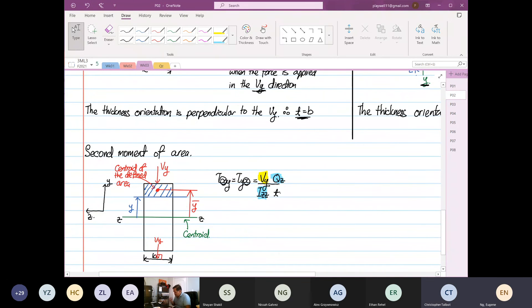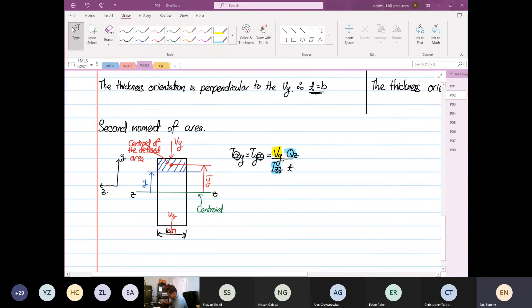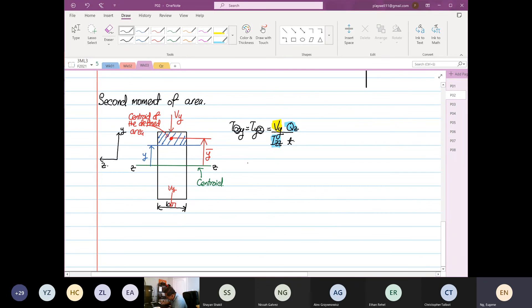So now we want to look at the second moment of area, which is Izz. So let me write out the general formula. Second moment of area I is equal to width multiplied by depth cubed divided by 12. So which is the width and which is the depth?